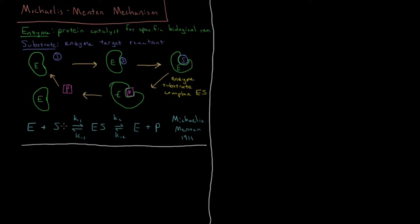This type of mechanism was proposed by Michaelis and Menten in 1911, and it involves two elementary reactions. First, the enzyme and substrate react to form the enzyme-substrate complex, as drawn in the top right. That goes forward with rate constant K1 and backward with rate constant K-1. Then the enzyme-substrate complex can react to form enzyme plus product, going forward with rate constant K2 and backward with rate constant K-2.